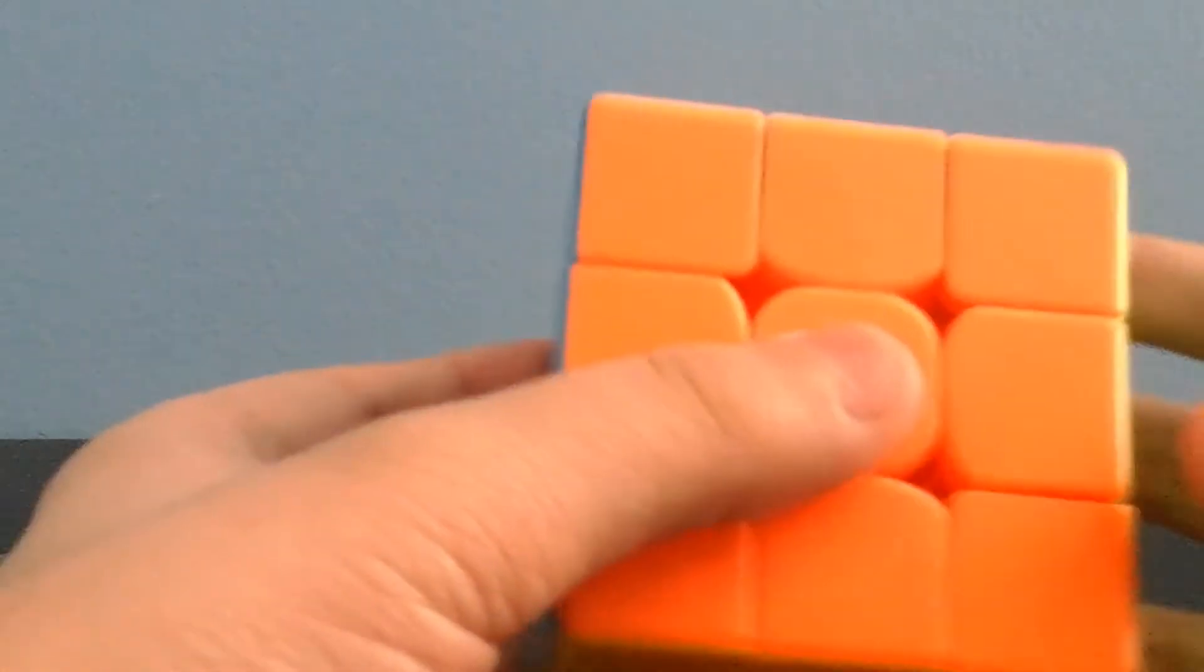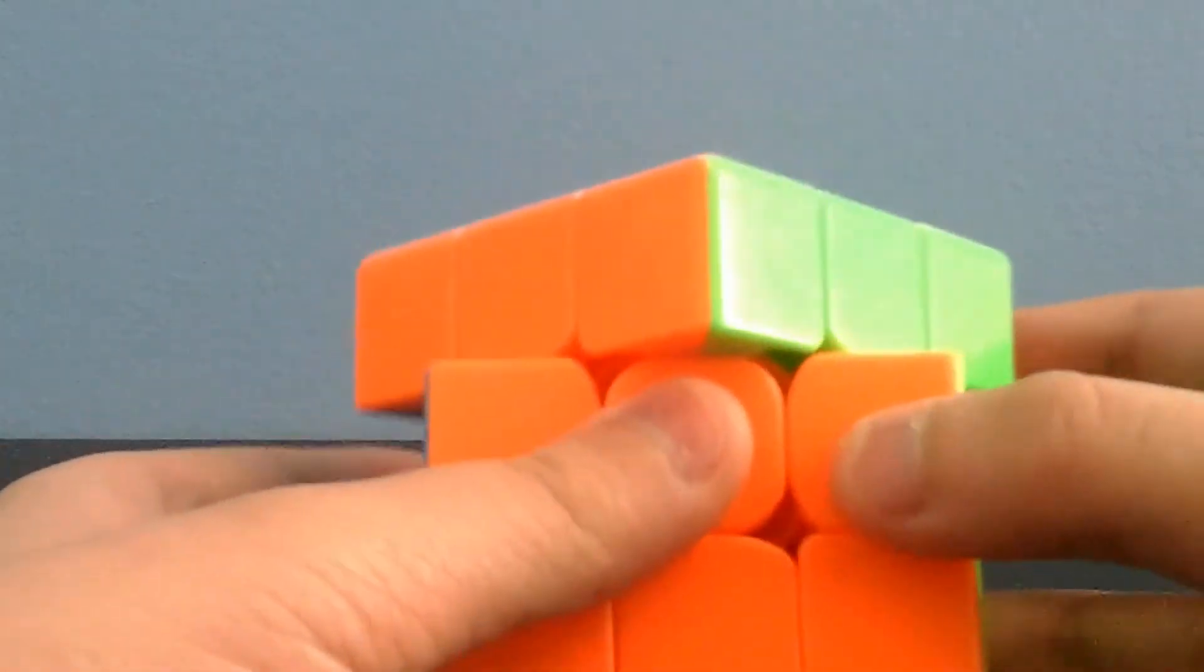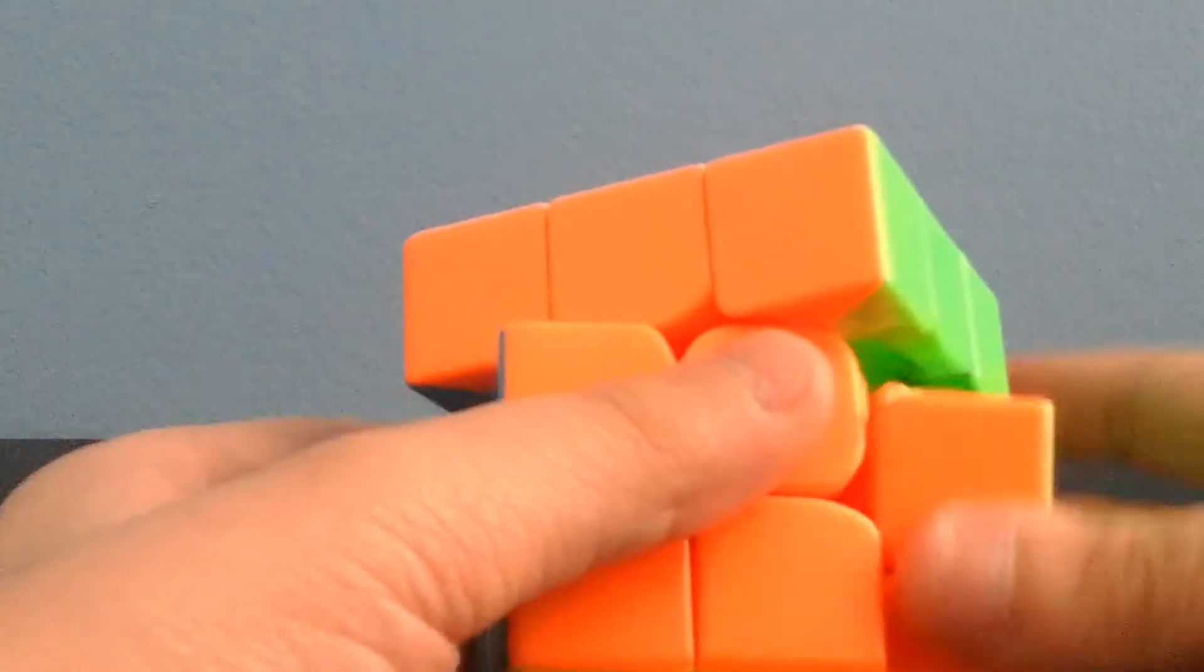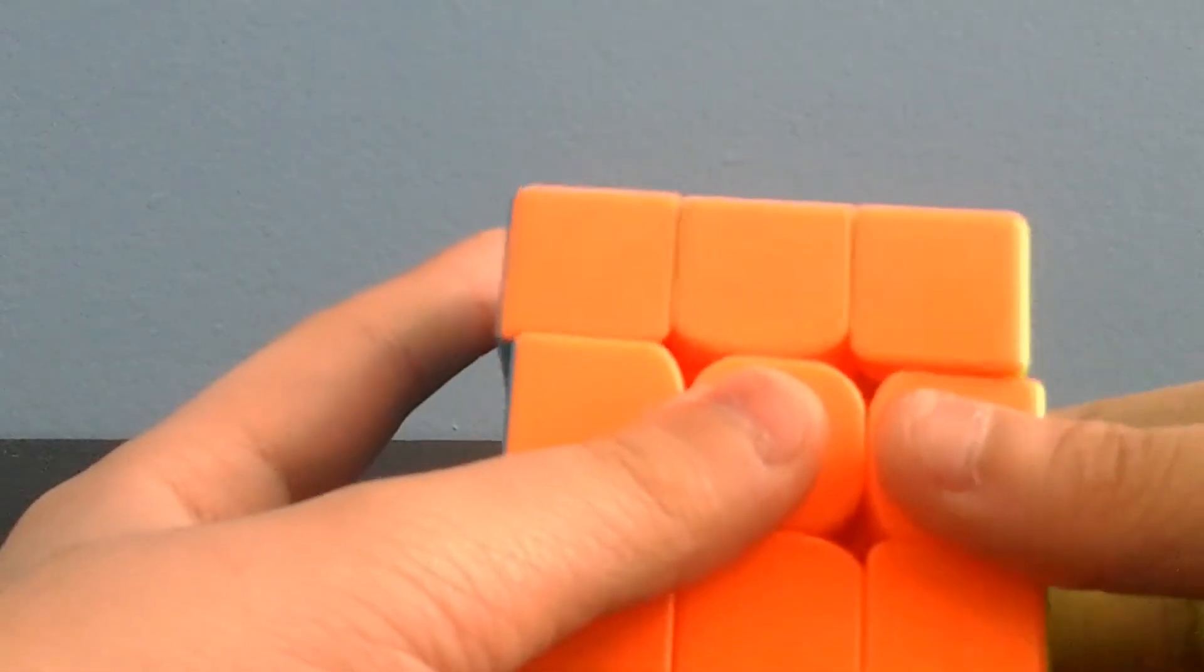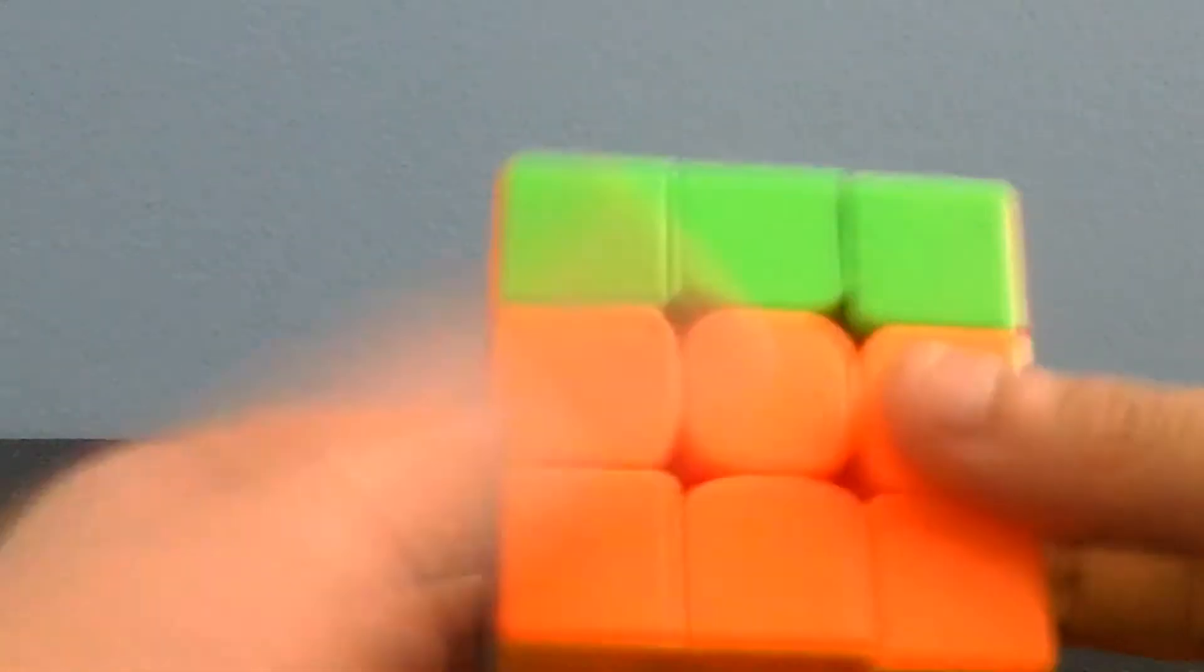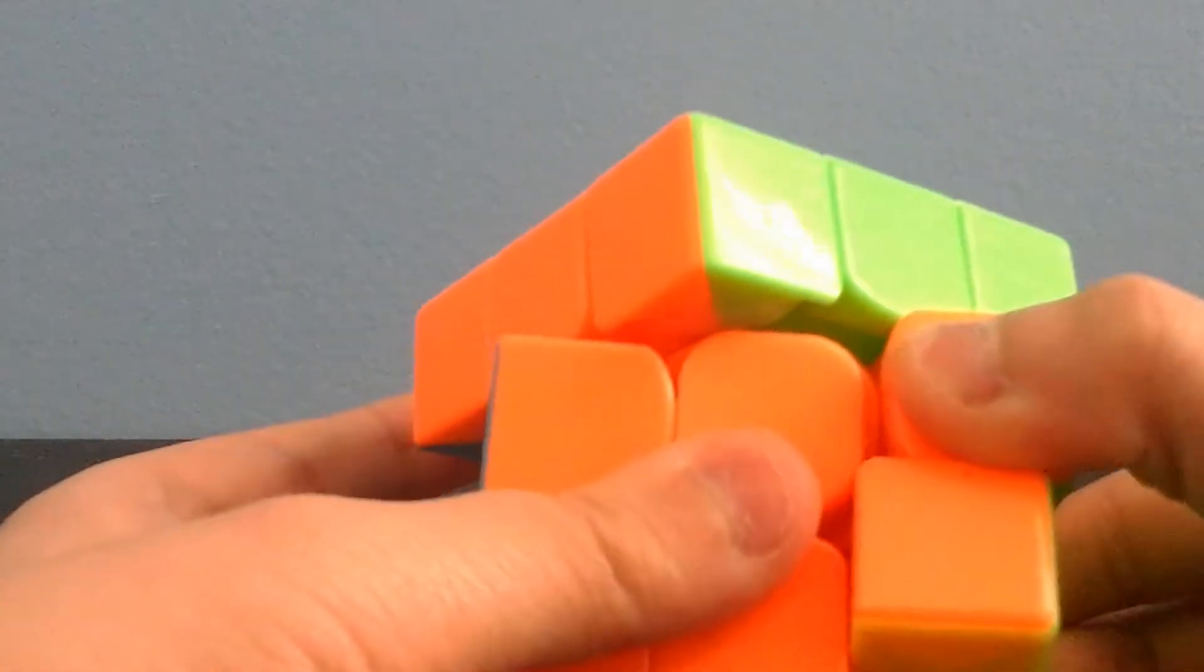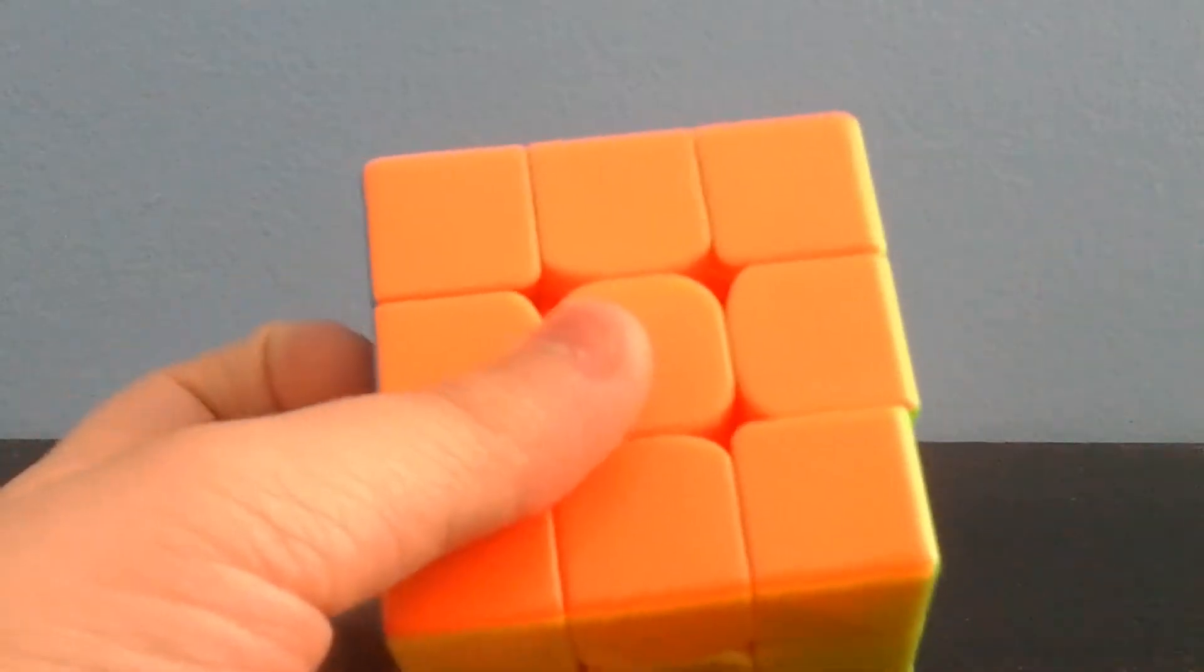The corner cutting is pretty good—it can cut 45 degrees and a small bit more. When it comes to reverse corner cutting, it cuts about here. This just becomes a regular corner cut. The only place it doesn't cut is around here, but that shouldn't be a problem during solves.